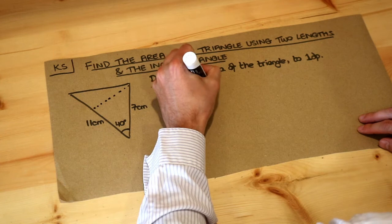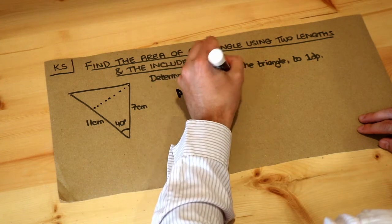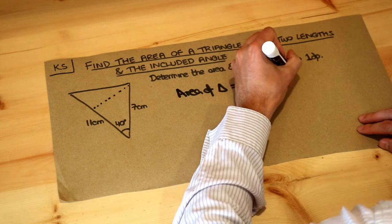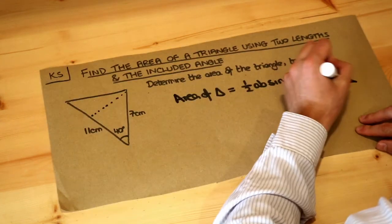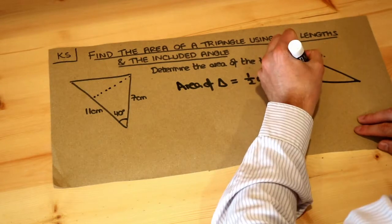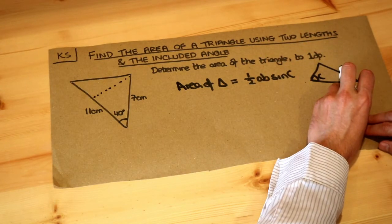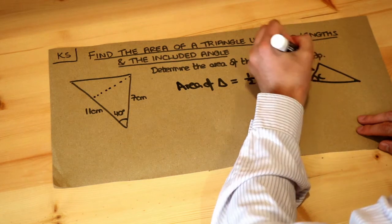So the area of a triangle is equal to half ab sine capital C, and let's remember how we label sides. If your angle was C here then the opposite side would be little c here and then the two other sides must be A and B.